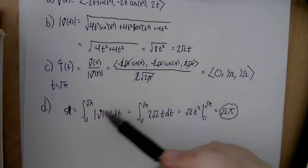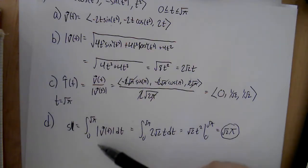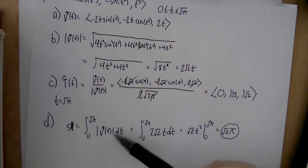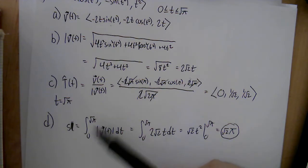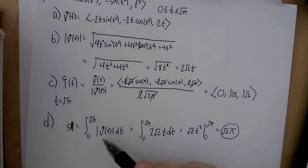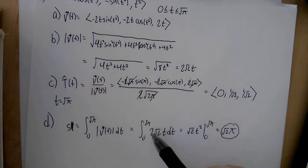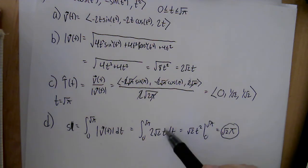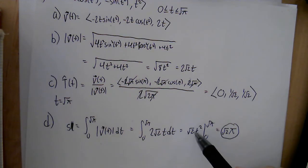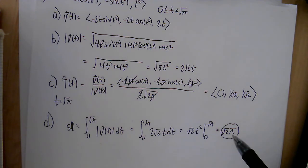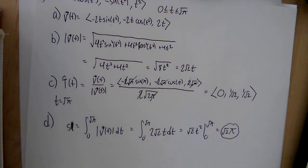The arc length from 0 to root pi is the integral of the speed over that interval. Since speed equals 2 root 2 t, we integrate that from 0 to root pi. Applying the power rule, we get root 2 times t squared evaluated from 0 to root pi. Plugging in root pi squared gives pi, so the arc length is root 2 times pi.